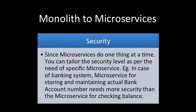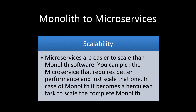Then comes security. In microservices, since each service does only one thing, you can tailor the security level of a specific microservice to your needs. For example, in a banking system, the microservice storing actual bank accounts can have very high security, whereas a microservice just to check the balance or order checks can have lighter security. In a monolith, you have to apply the same level of security throughout the entire software, which can be very costly.